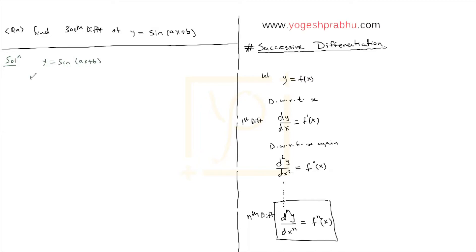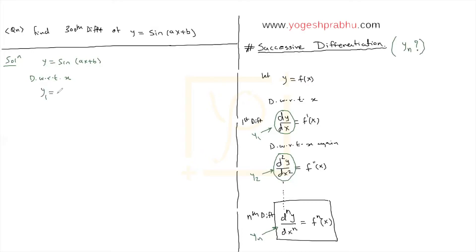It's very clear we are not going to differentiate 300 times — there has to be a smarter way. We already have y equals sine of ax plus b. In these cases, instead of calling it dy by dx, we write y1 for the first derivative, y2 for the second, and yn for the nth derivative. Let's begin with y1: differentiating sine gives cos, so we get a·cos(ax + b) by the chain rule.